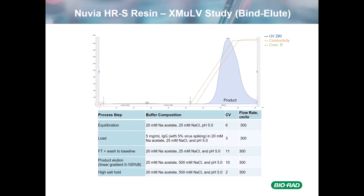Here we have the chromatogram and operating conditions for the Nuvia HRS XMULV study. The pH chosen was pH 5 — a typical operating condition for a cation exchanger — with 20 millimolar acetate, 25 millimolar salt. The product was eluted using a 0 to 100% B gradient over 10 CVs with 20 millimolar acetate, 500 millimolar salt, pH 5. At the end, a high salt hold ensured all product was recovered. The flow rate was 300 centimeters per hour to demonstrate high throughput.